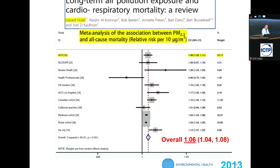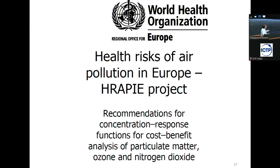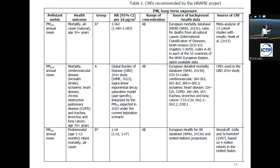This result was also taken up by the World Health Organization, which recommended this exposure-response function in their report. If you need exposure-response functions for air pollution, you can search the WHO RAPIER report and get a lot of exposure-response functions. The recommended function is 1.06, exactly the result of the systematic review published in 2015.